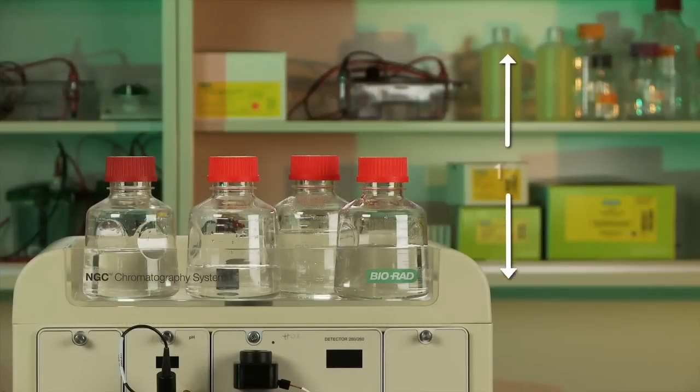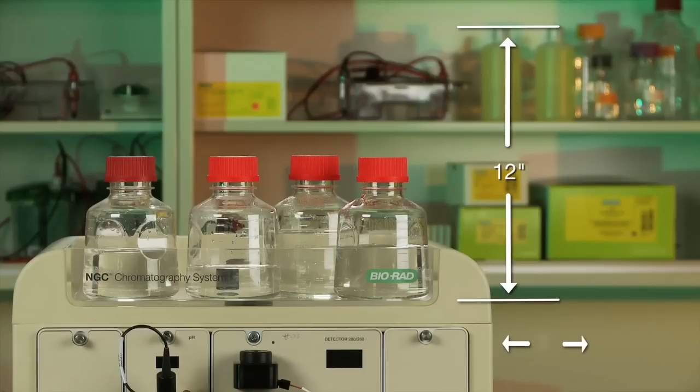We recommend an additional overhead clearance of 12 inches to accommodate bottles in the buffer tray and 3 inches of side and back clearance for wires and any additional components or columns that may attach to the sides of the NGC instrument.